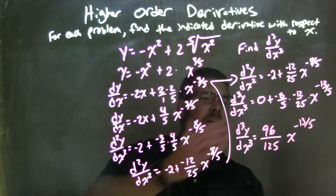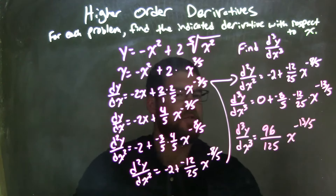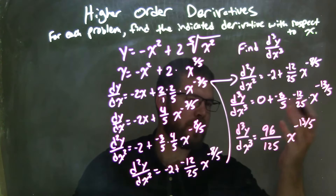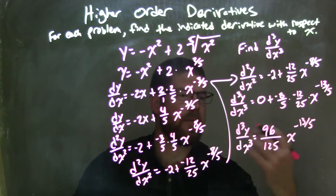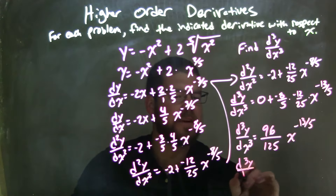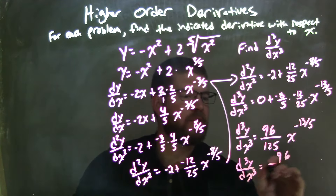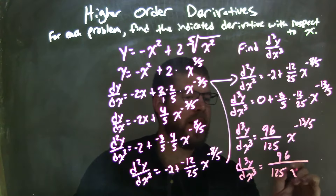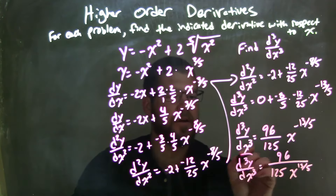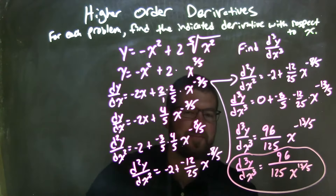I don't like to have a negative exponent in my final answer, so I'm going to bring that x to the negative exponent down to the denominator to make it positive. So d³y/dx³ equals 96 over 125x to the positive thirteen-fifths power. And there we have our final answer.